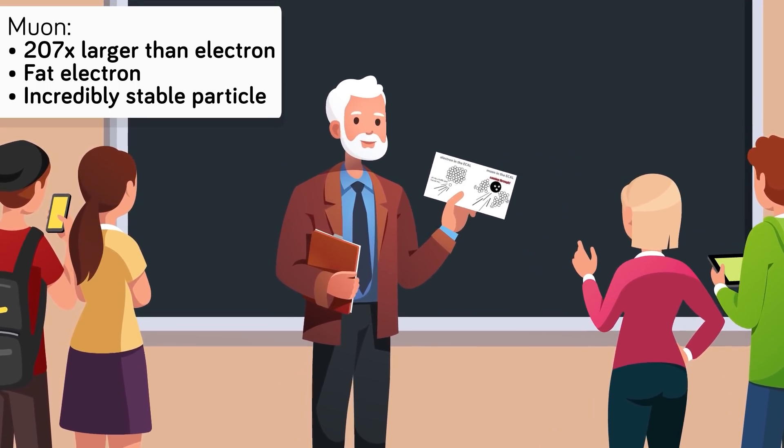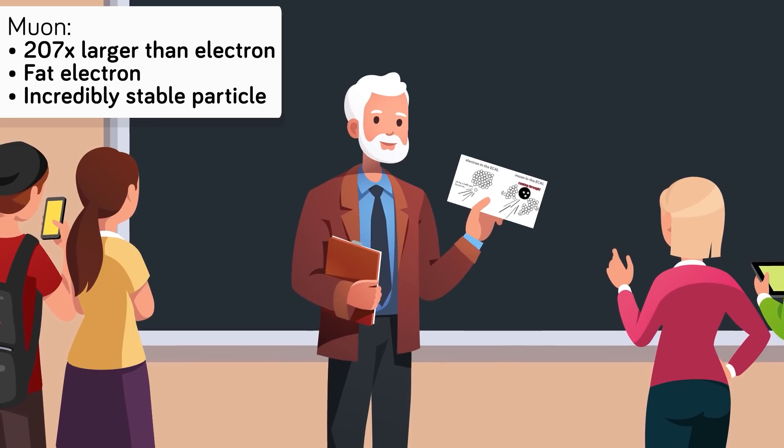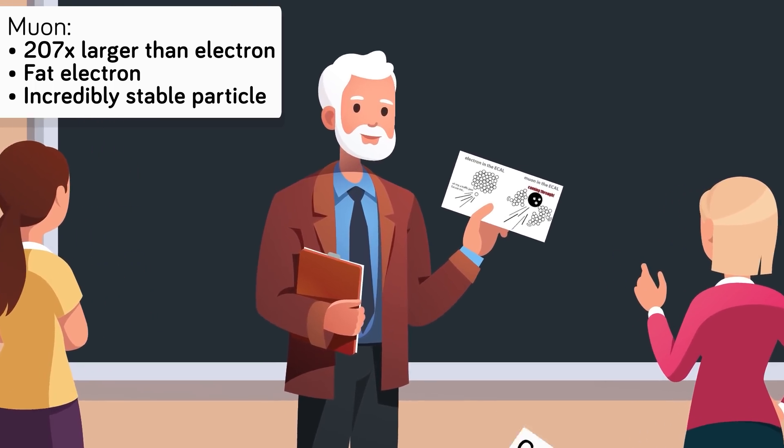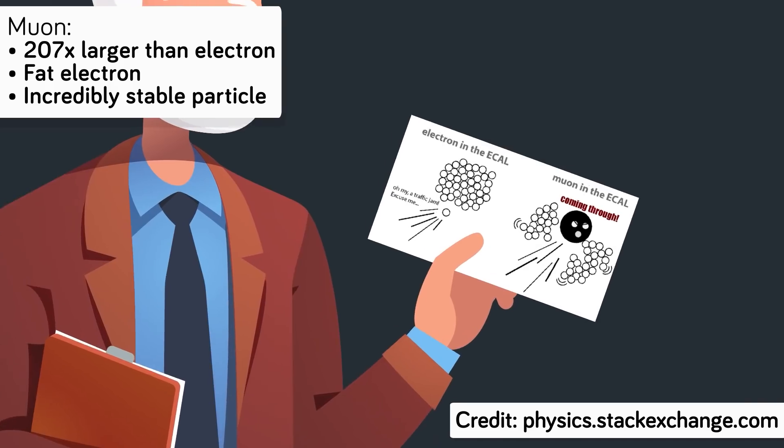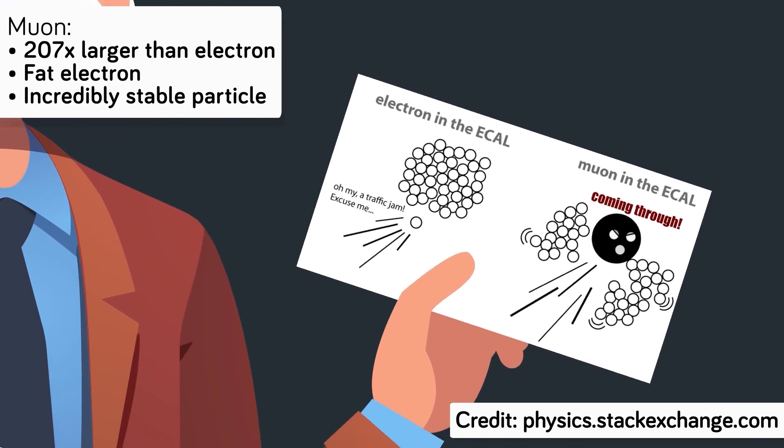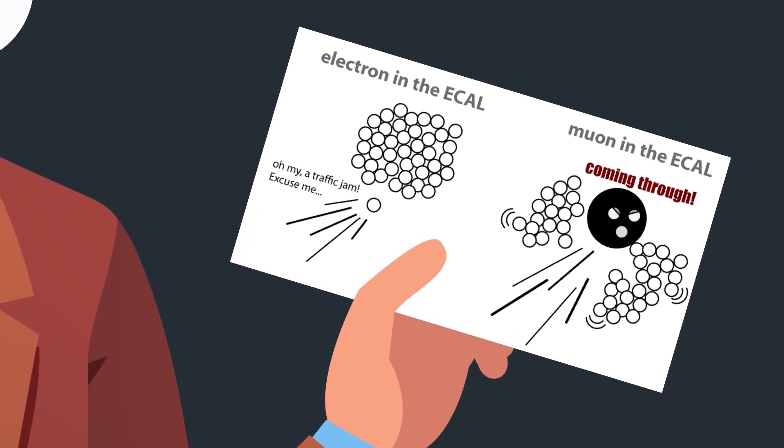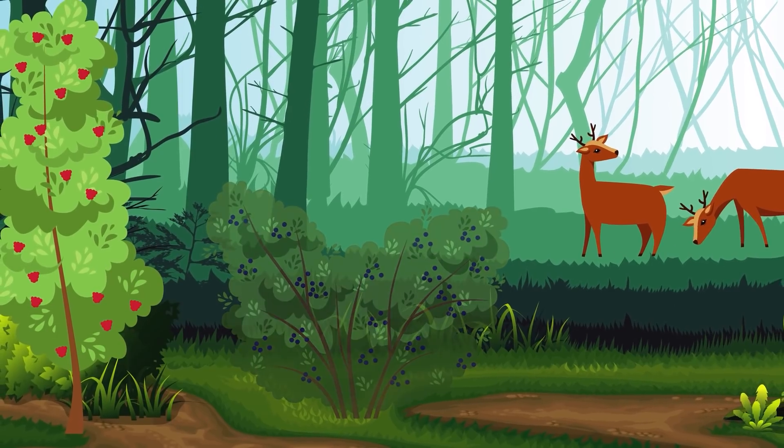It's so similar to an electron in a structural sense that some scientists even refer to them as fat electrons. And crucially, it's also an incredibly stable particle, meaning it won't degrade as quickly as some others.